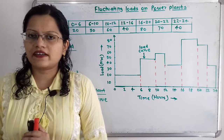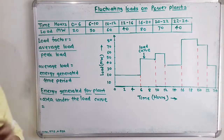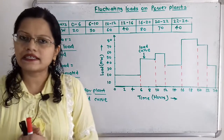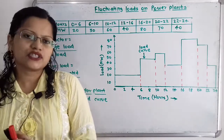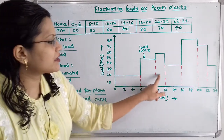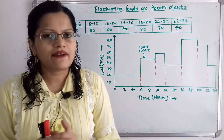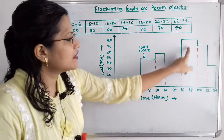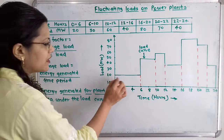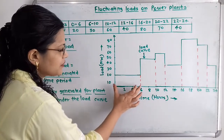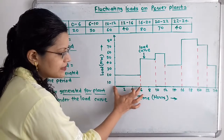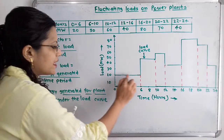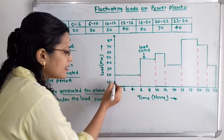We will first calculate the load factor for the plant. The load factor is average load divided by peak load, and average load is energy generated divided by time period. The area under the load curve equals the energy generated. For the first rectangle, the length is 6 hours and height is 20 megawatt, so the area is 20 multiplied by 6.